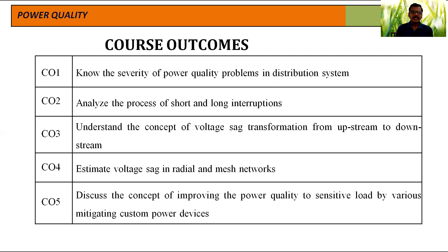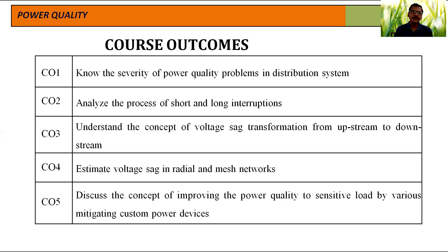The fifth outcome is to discuss the concept of improving power quality to sensitive loads by various mitigating custom power devices. After discussing all the characteristics of the power quality problems and their effects on power electronic equipment and load equipment, finally, how to reduce the power quality problems — that is called mitigation of power quality or improving of power quality — with the help of different devices called custom power devices. Power control devices are called custom power devices, which mitigate the problems of power quality and improve the power quality. At the end of this course, the student will be able to learn all these five course outcomes.